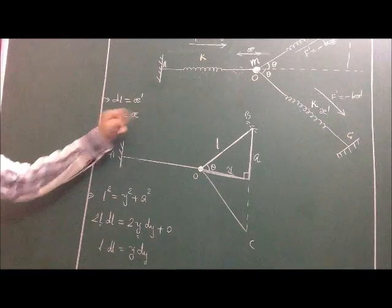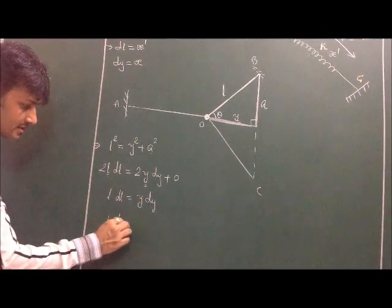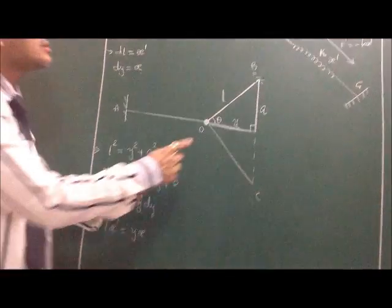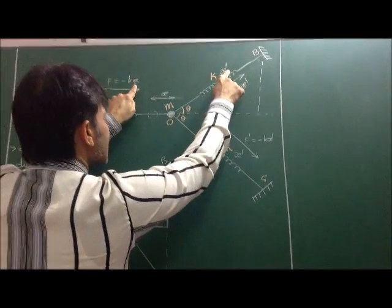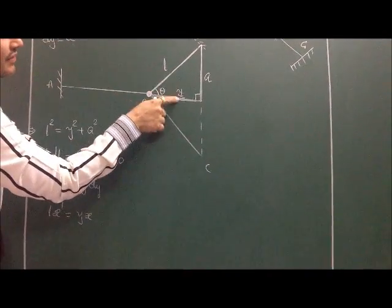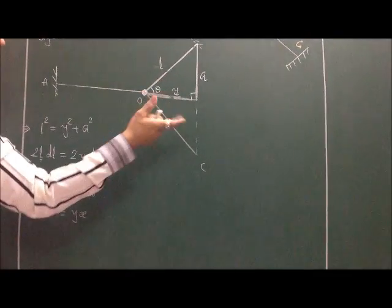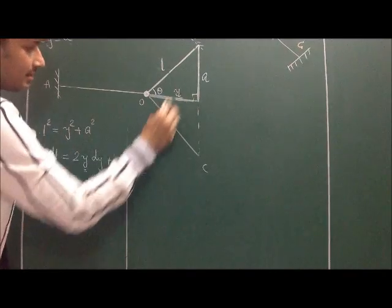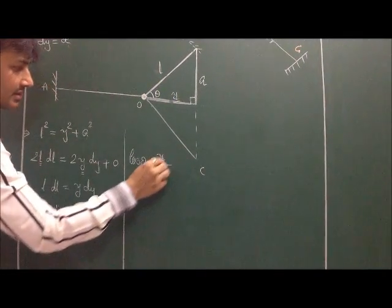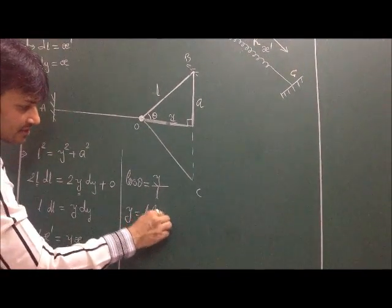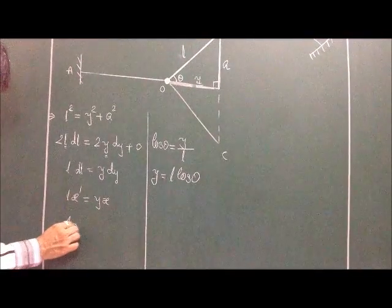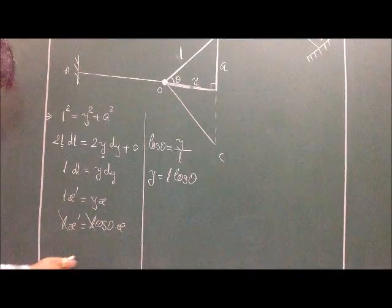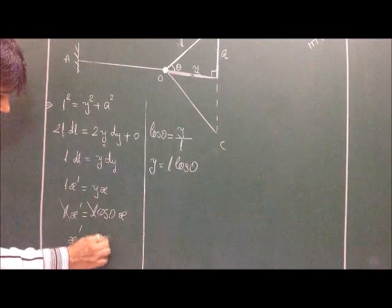We have dl equal to x-dash and dy equal to x. So substituting: l·x-dash equals y·x. To get the relation between l and y, I use cosine: cos theta equals y over l, so y equals l·cos theta. Substituting this in: l·x-dash equals l·cos theta times x. The l cancels, giving x-dash equals x·cos theta. This is a very important result.